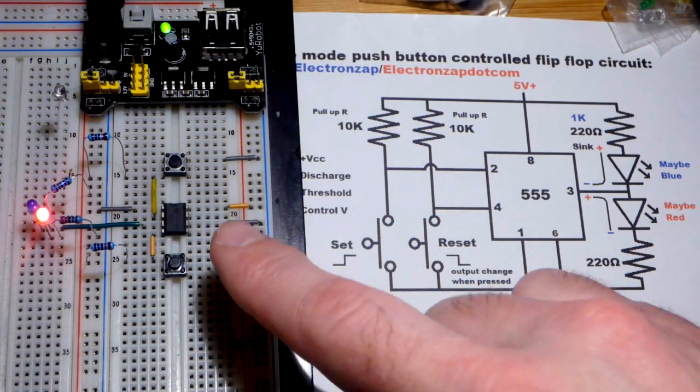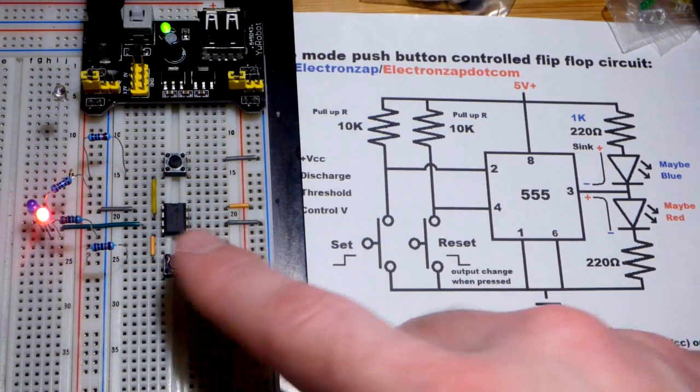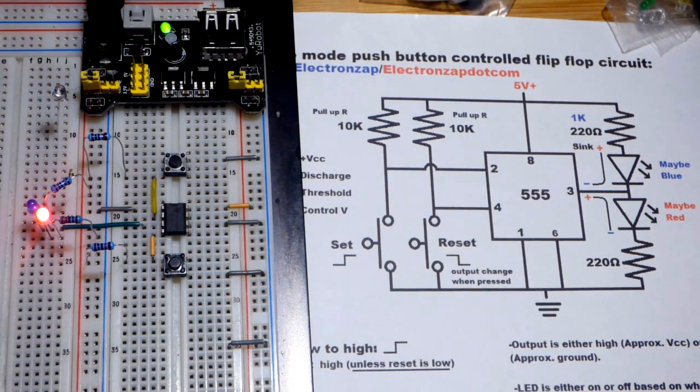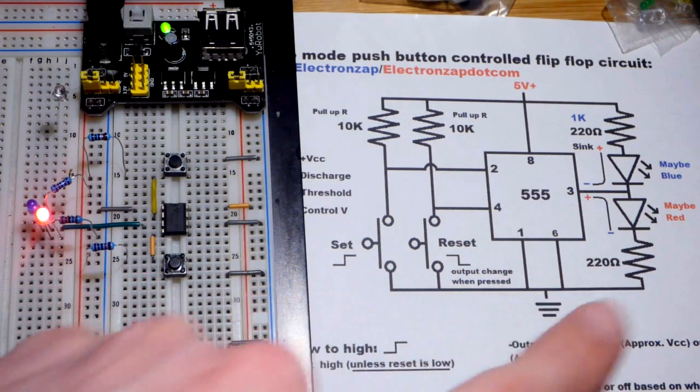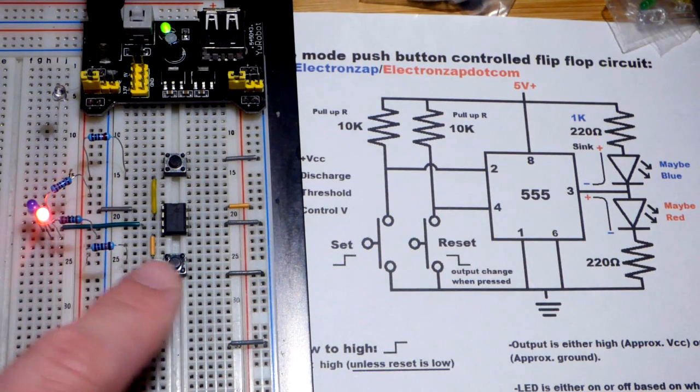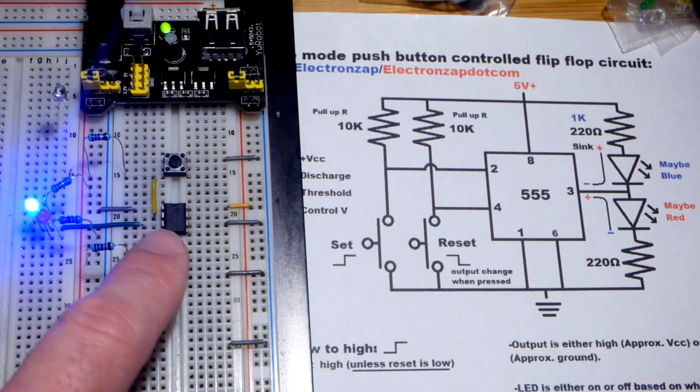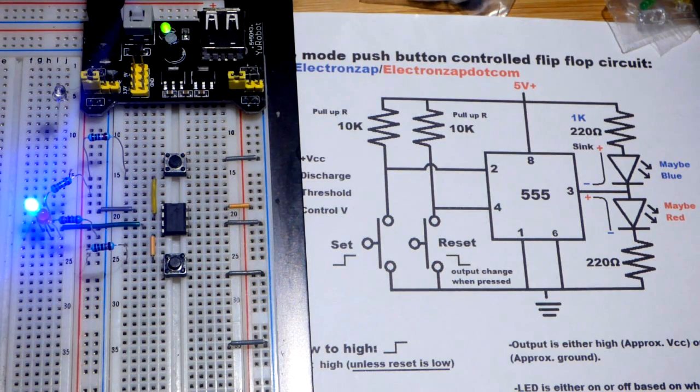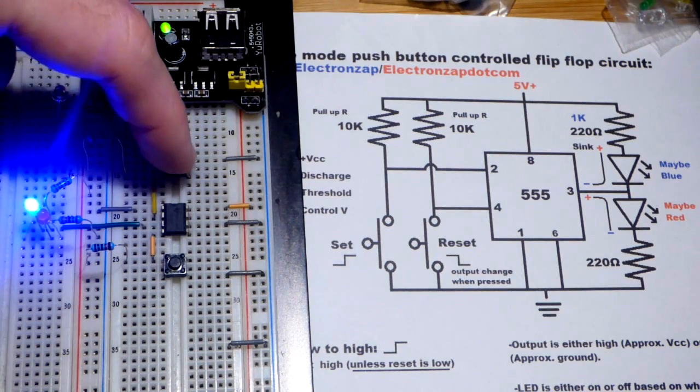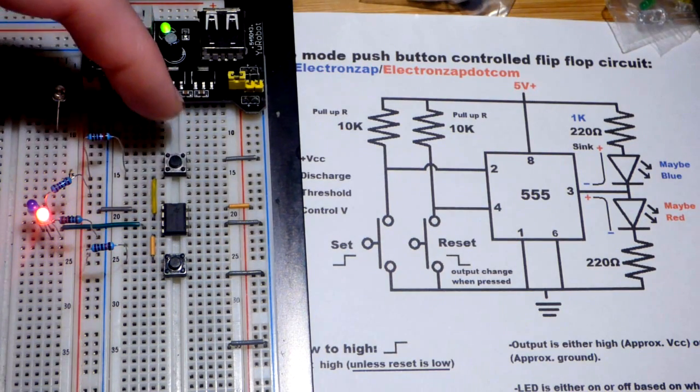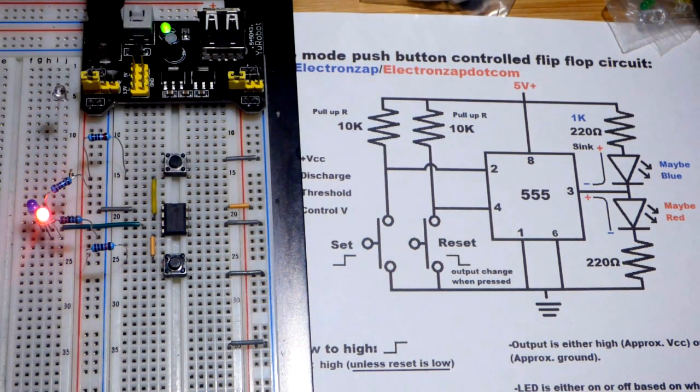And so what this does with the 555 timer, we can set the output either high or low. So right now the output's high. That's just how we wired the red LED. We can tell the output's high when the red LED is on. When I press the reset button, then the output goes low. We have the blue LED wired so that it lights when the output goes high. And then we can press the set button and it will stay in the position that we set it. So it is bistable. It will stay in one of two positions until we do something.